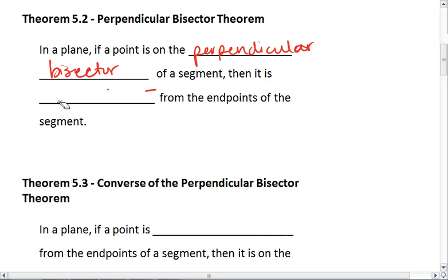Let me write that a little clearer. So equidistant means equal distance, and it's spelled E-Q-U-I-D-I-S-T-A-N-T, from the endpoints of the segment.